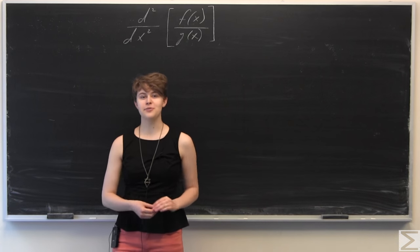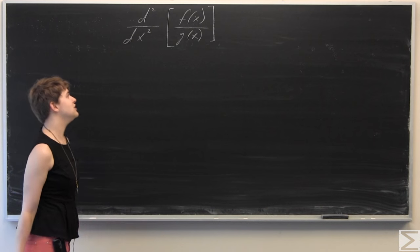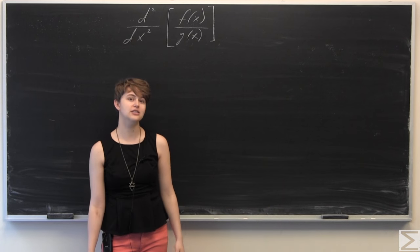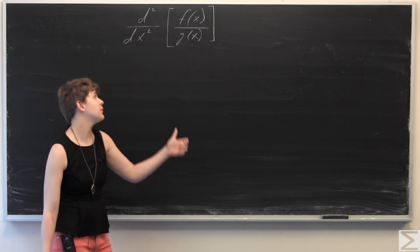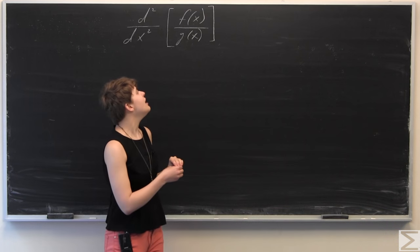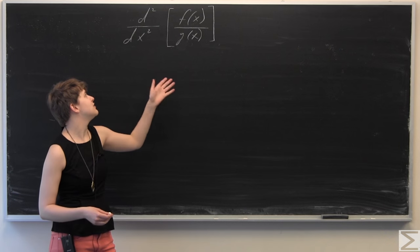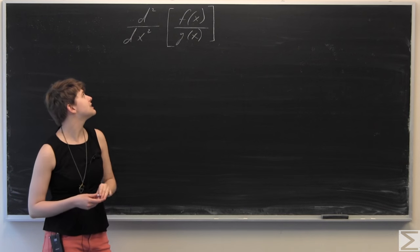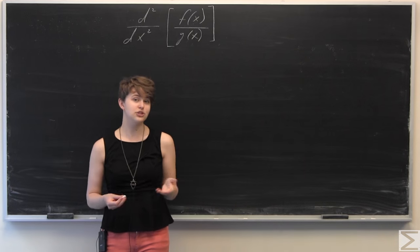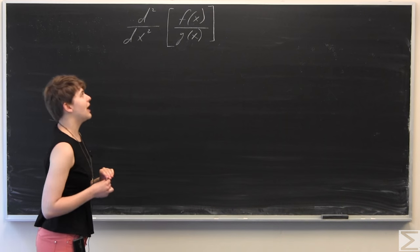This week's problem of the week asks: given two C2 functions — so the first and second derivatives are defined and well-defined and exist for both f(x) and g(x), where g(x) is non-zero — find an expression for the second derivative with respect to x, d²/dx². Essentially we're just going to apply the quotient rule twice and see what we get.